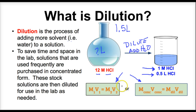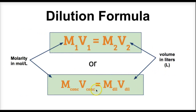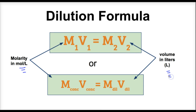The dilution formula states that M1 times V1 equals M2 times V2, where the capital M stands for the molarity of the solutions in moles per liter, and V stands for the volume of the solution in liters.